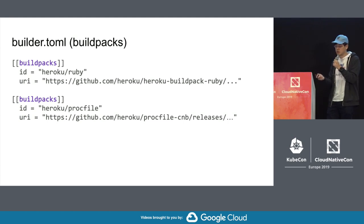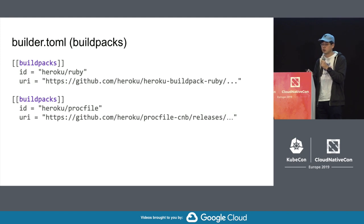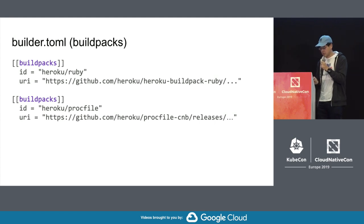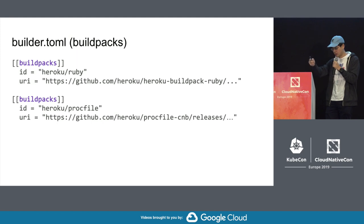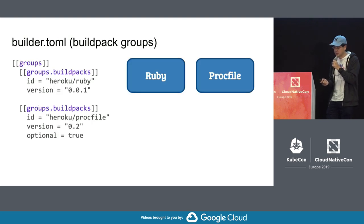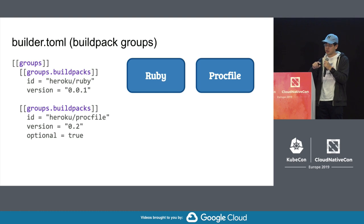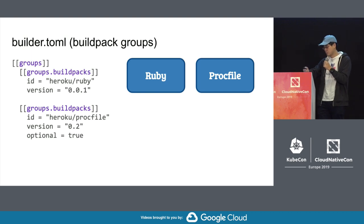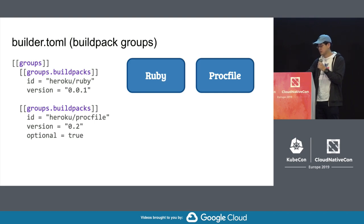The next section lists the Buildpacks you want available in the builder. You specify the ID of each Buildpack and where to get it — in this case, a Ruby and a Procfile one. Once you've listed all the Buildpacks, you can build groups that run together as a chain. The Ruby Buildpack runs, then the Procfile Buildpack. You can set Buildpacks as optional — if detect fails on Procfile, the build still succeeds; but if Ruby fails, since it's required, the build fails and proceeds to the next group.